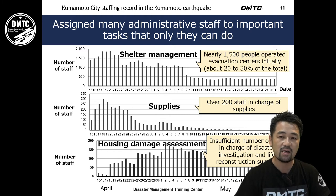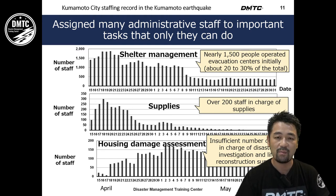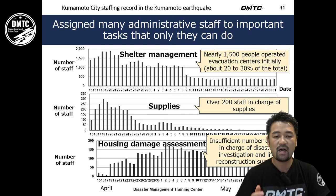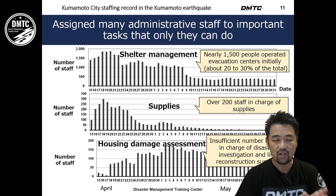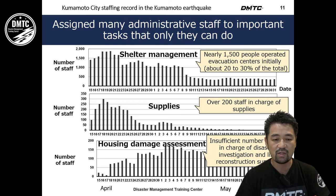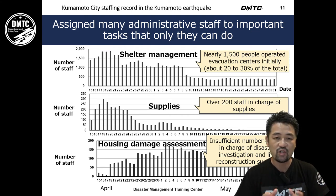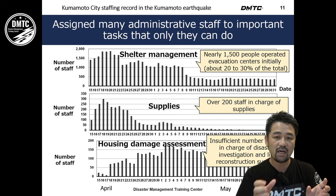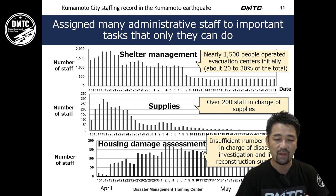The house owner can submit this damage certificate document to the local government to receive public services. That is why housing damage assessment is very important, even though fewer staff are assigned. Under COVID-19, so many shelters are opened, meaning we must manage a very large number of staff. How to manage human resources is therefore a critical function.